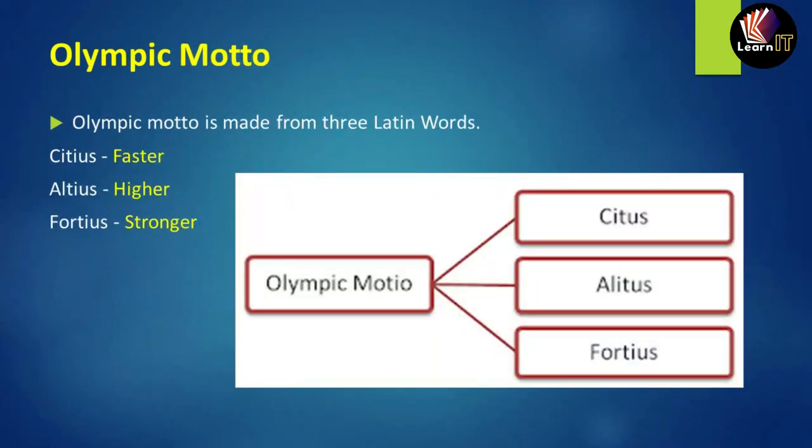Now let us move to the Olympic motto. It is made of three Latin words: Citius, Altius, and Fortius. Citius means faster, Altius means higher, and Fortius means stronger. Together the motto means: faster, higher, stronger.